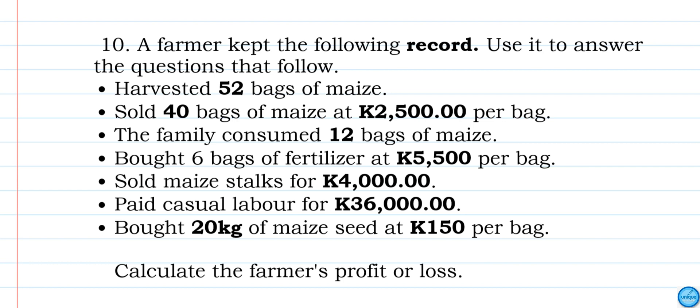He harvested 52 bags of maize. 40 bags out of 52 bags were sold at K2,500. The remaining 12 bags were consumed by the family. He also bought 6 bags of fertilizer at K5,500, and he sold the maize stalks at K4,000.